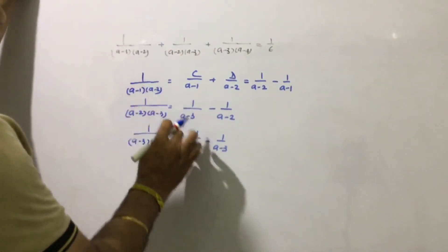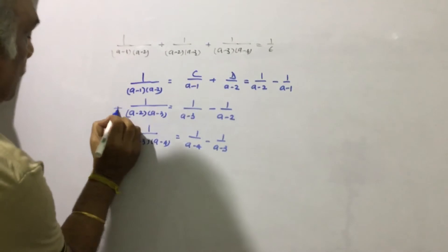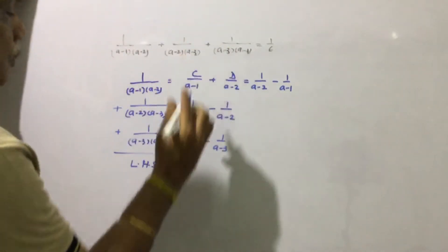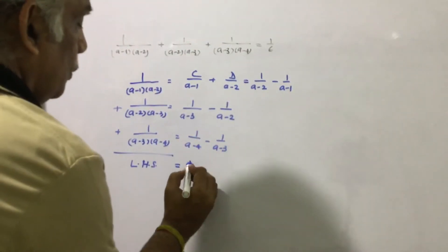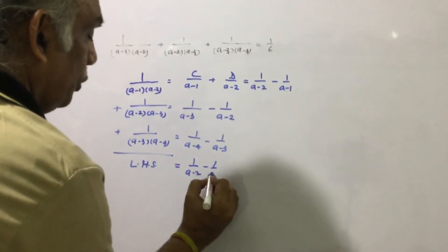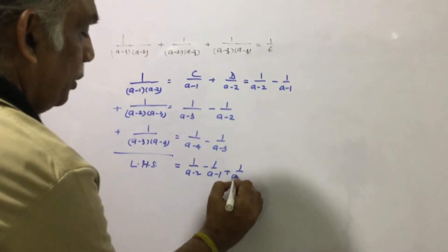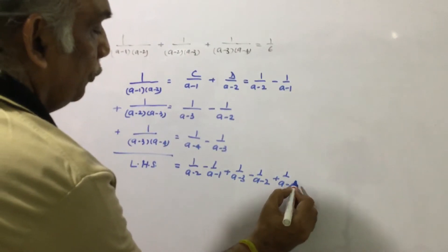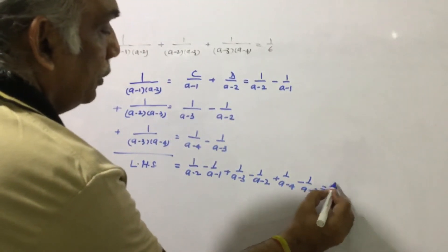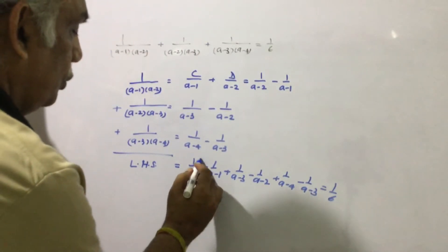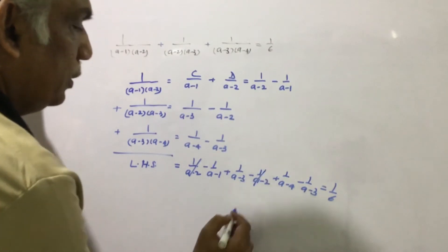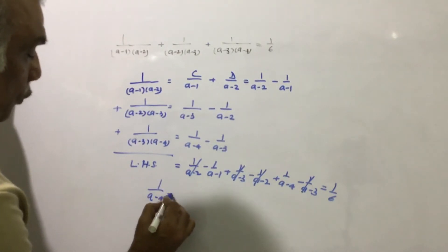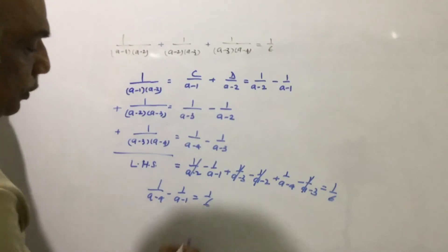Putting these values and adding, we get the left-hand side of this equation as: 1 upon (a minus 2) minus 1 upon (a minus 1), plus 1 upon (a minus 3) minus 1 upon (a minus 2), plus 1 upon (a minus 4) minus 1 upon (a minus 3). The 1/(a minus 2) terms cancel, and the 1/(a minus 3) terms cancel, leaving us with 1 upon (a minus 4) minus 1 upon (a minus 1) equal to 1 by 6.